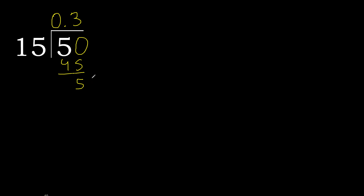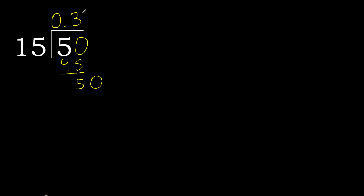Next — that is not a number, therefore complete, always complete with 0. Point is here. 15 multiplied by 3 is 45. Subtract and complete.